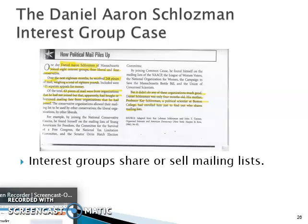Of that total mail, 63 pieces were from organizations he had not joined but that had apparently bought or borrowed mailing lists from organizations he had joined. The conservative organizations allowed their mailing lists to be used by other conservatives, and the liberal organizations by other liberals. For example, by joining the National Conservation Caucus he found himself on the mailing lists of Young Americans for Freedom, the Committee for the Survival of a Free Congress, the National Tax Limitation Committee, and the Senator Orrin Hatch Election Committee. By joining Common Cause he found himself on the mailing lists of the NAACP, the League of Women Voters, the National Organization for Women, the Campaign to Save the Massachusetts Bottle Bill, and the Union of Concerned Scientists.